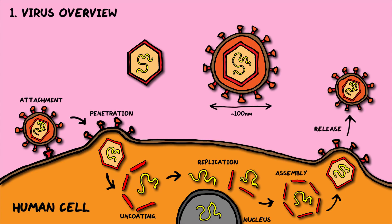Viruses are the most abundant form of life on Earth — but are they life? Not really. They can't reproduce on their own, so they have to invade other cells to take over their molecular machinery to reproduce, using the steps shown here, which I'll go into more detail on later.